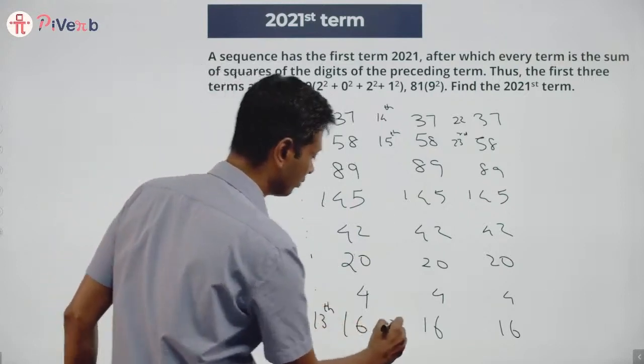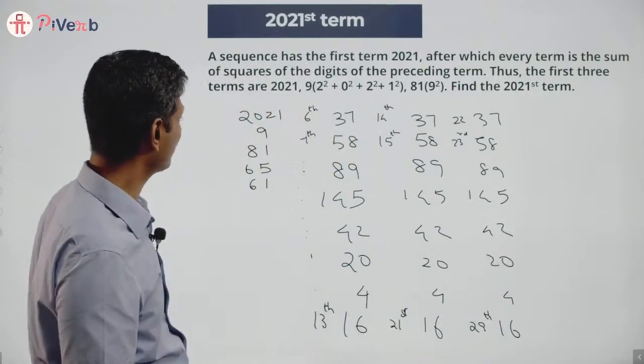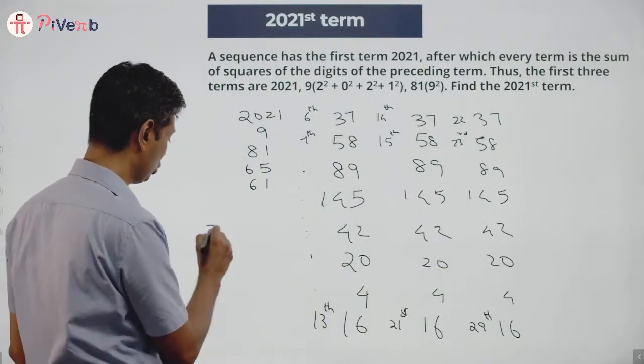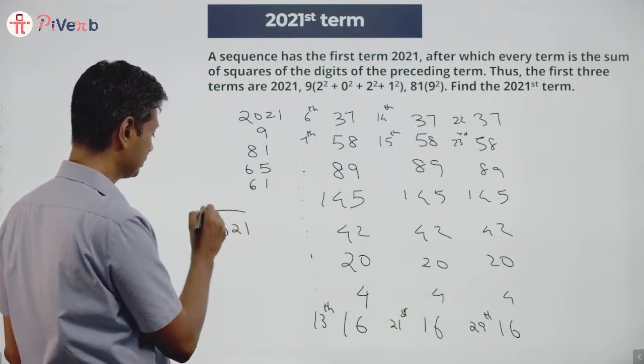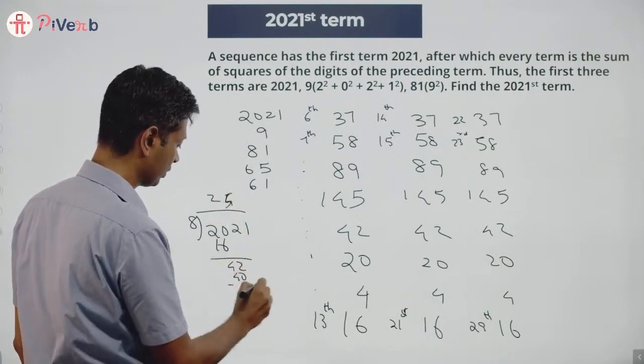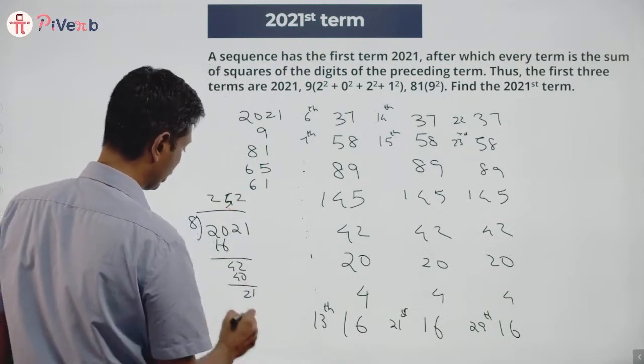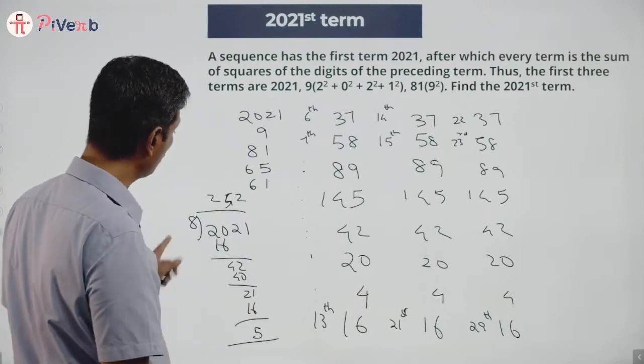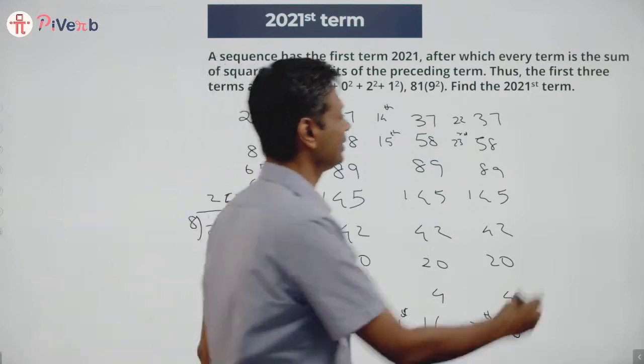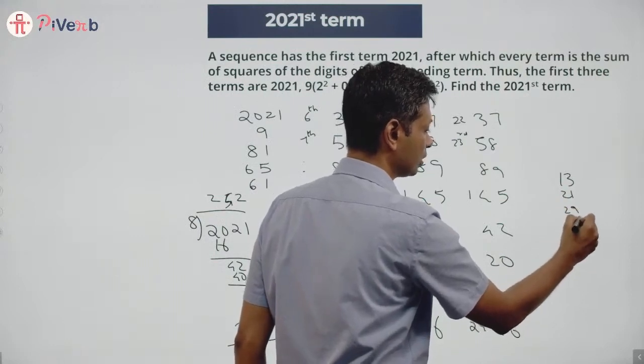All we have to do is find where 2021 is. I divide by 8 and get the remainder. 2021 divided by 8: 2 times 16 is 32, 5 times 40... 2 times 16, remainder 5. So 2021 is of the form a multiple of 8 plus 5.